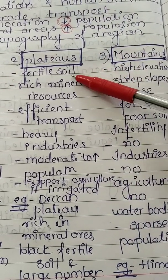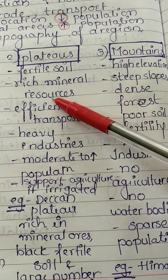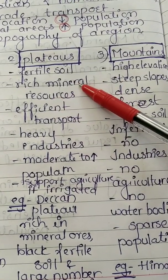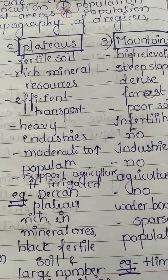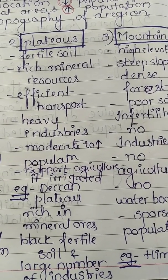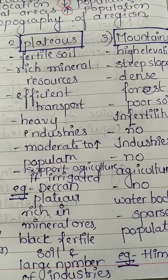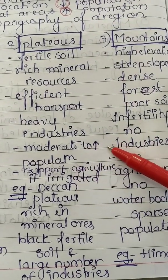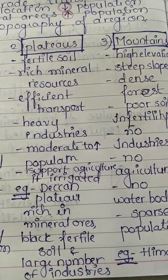So the key qualities of plateaus are: fertile soil, rich mineral resources, efficient transportation, heavy industrialization, moderate to high population, and support for agriculture when well irrigated.